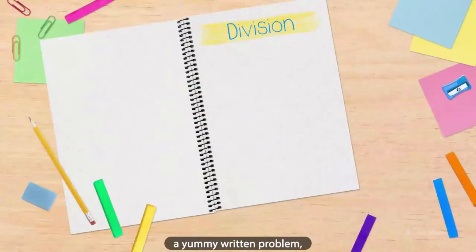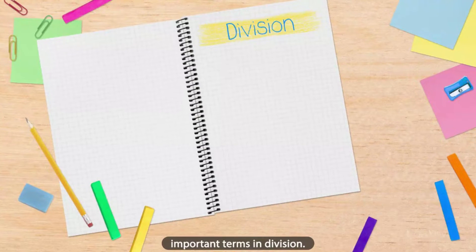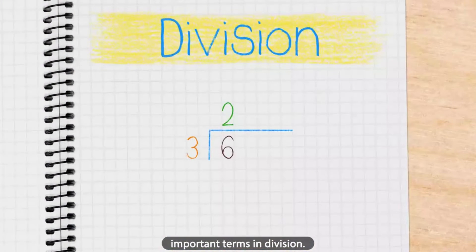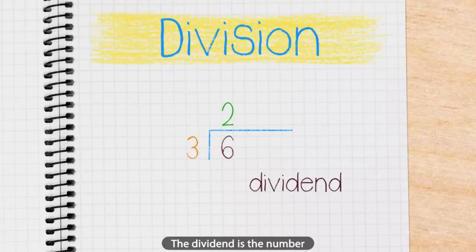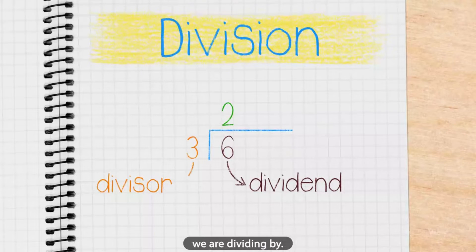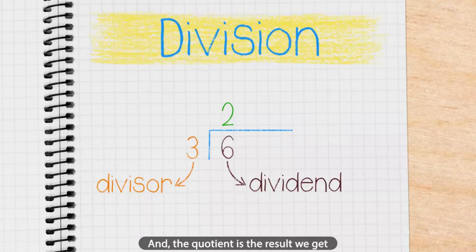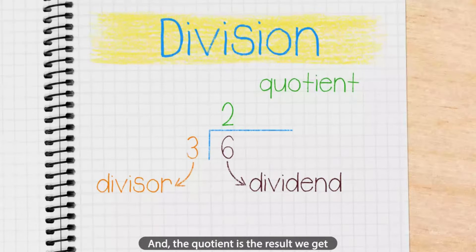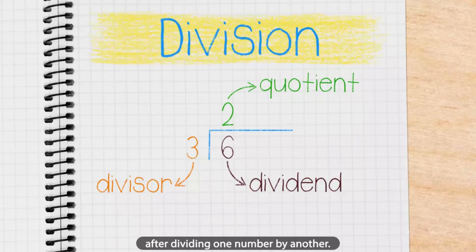Before we turn this into a written problem, let's go over some important terms in division. The dividend is the number that is to be divided. The divisor is the number we are dividing by. And the quotient is the result we get after dividing one number by another.